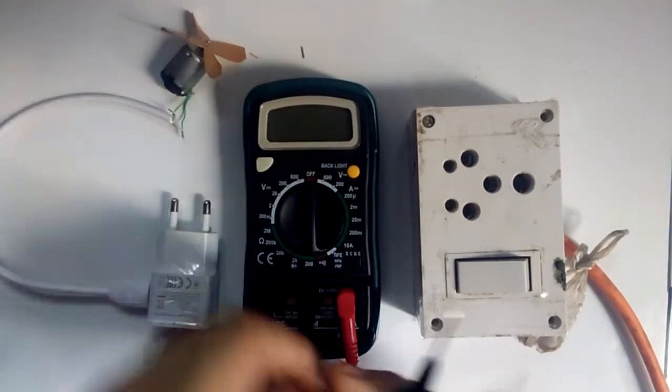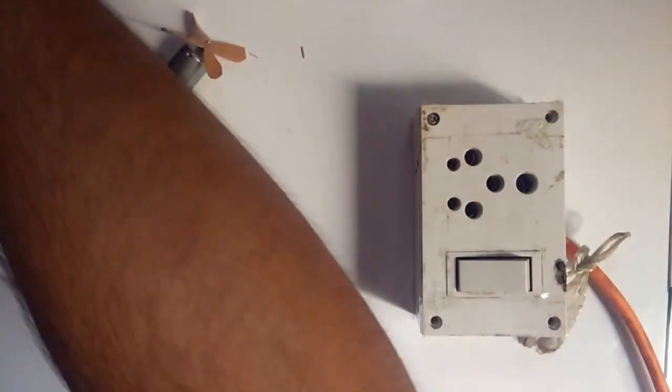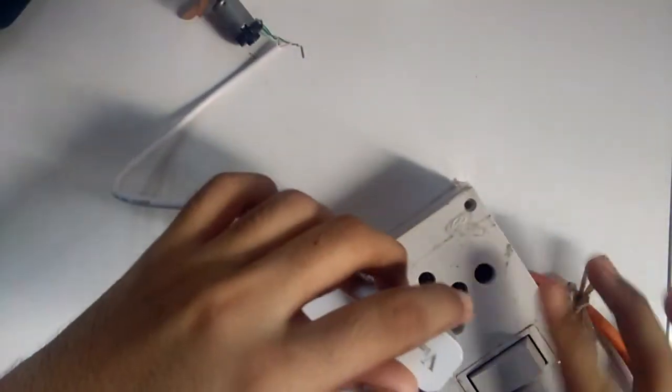Let's turn off the multimeter and put it on the side. And now off the switch and plug the wire.